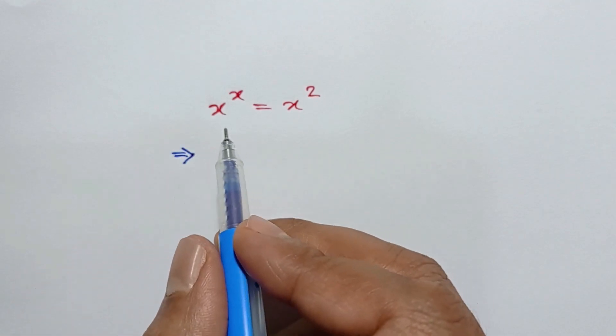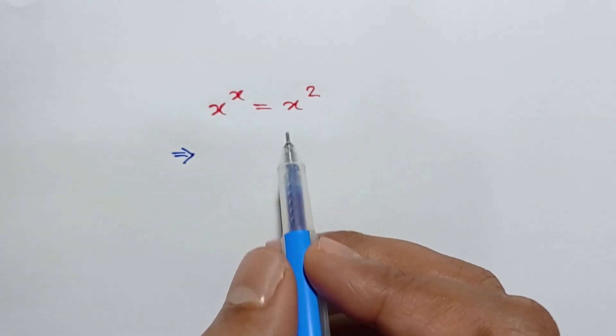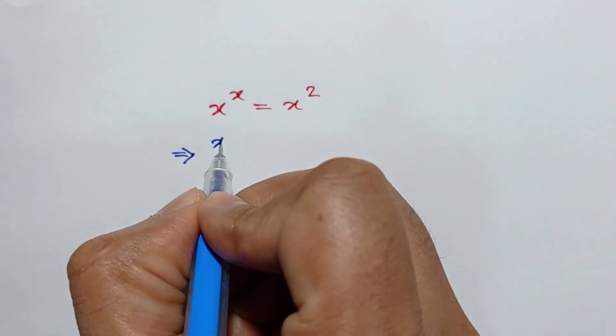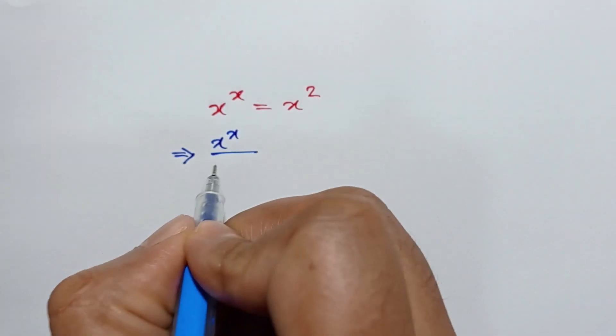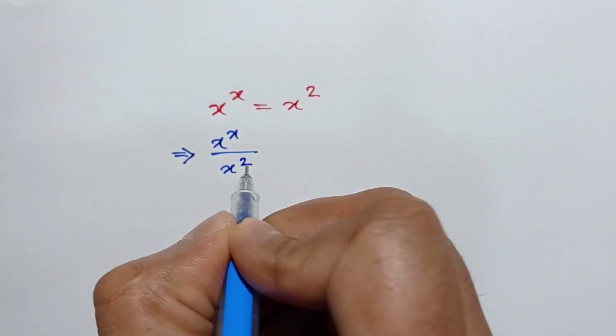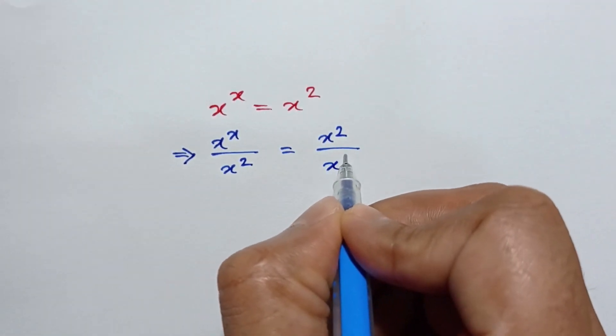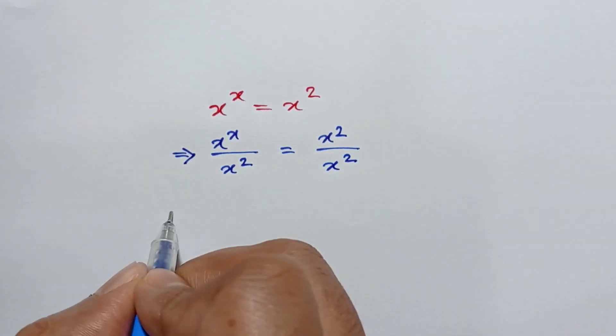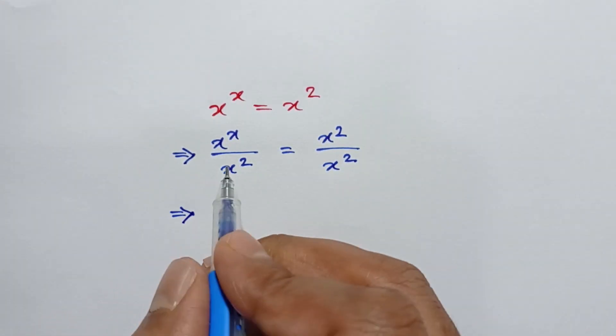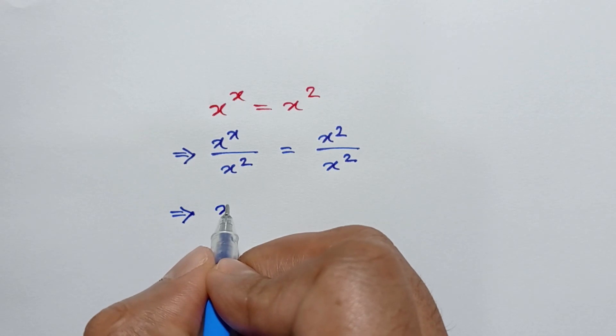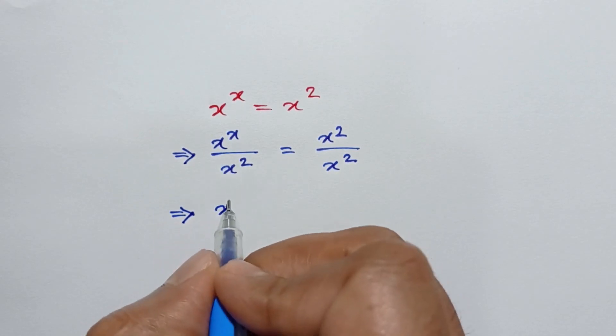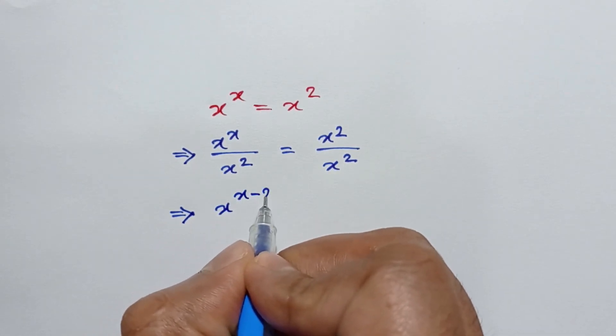Dividing both sides by x squared, we can write x to the power x over x squared equals x squared over x squared, or it can be written as x to the power x minus 2 equals 1.